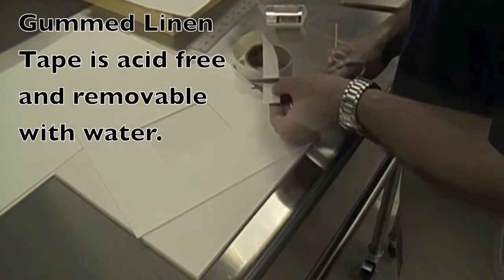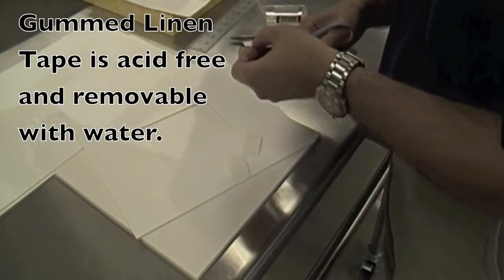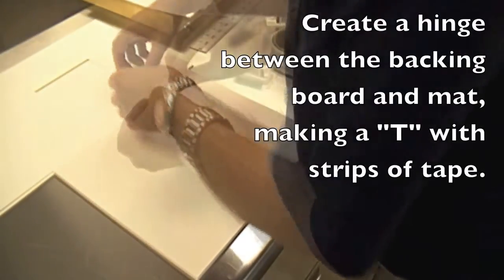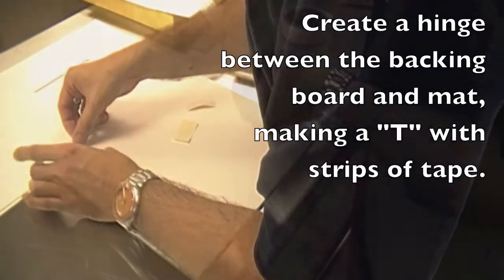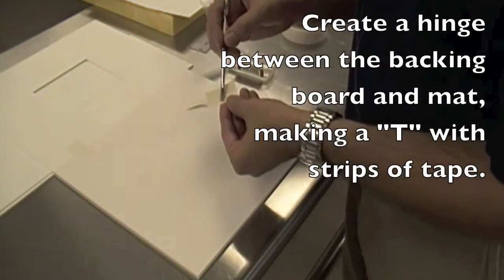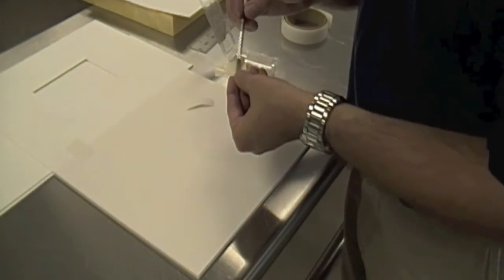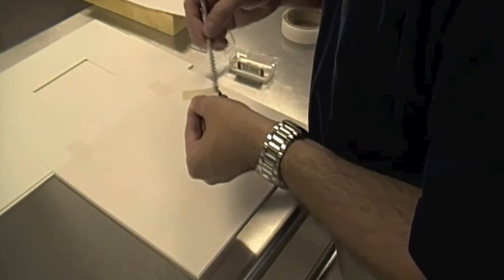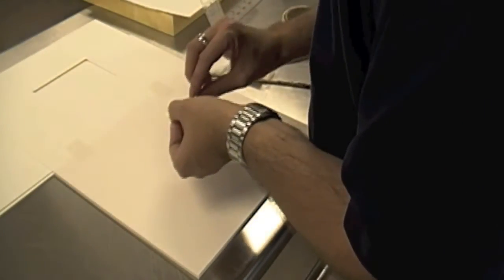Now I'm putting the mat board onto the backing board. I've cut a gummed linen tape. I make some tease with this actually. You wet the glue that's on the back of the tape and put it across both the tops of the boards on the interior.